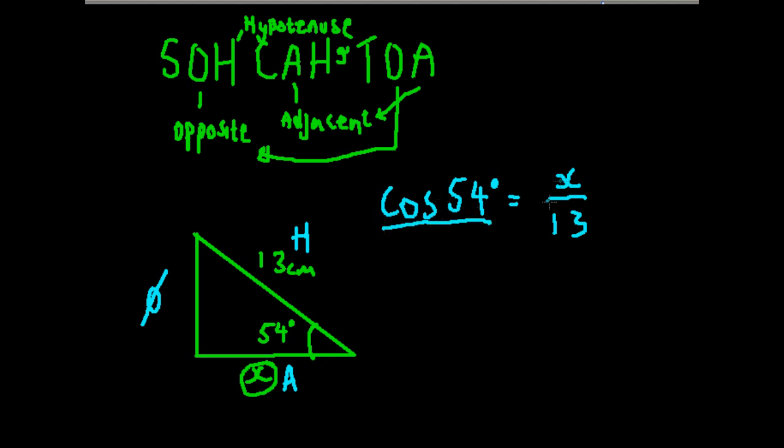We just need to rearrange it to make X the subject of the formula. So X equals 13 times cos 54. On the calculator, which I don't have on me at the moment, you'll get the answer and that would be your length.